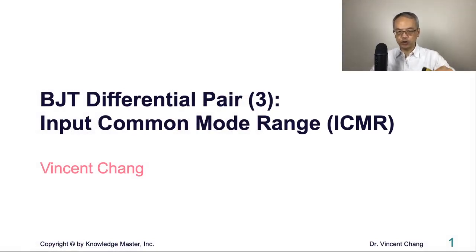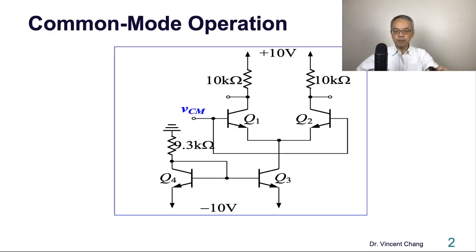Let's start with the common mode operation, assuming the two inputs are connected together, tied together and connected to a common mode input voltage VCM. The differential pair is now biased by a constant current source, a current mirror Q2, Q4, and Q3.